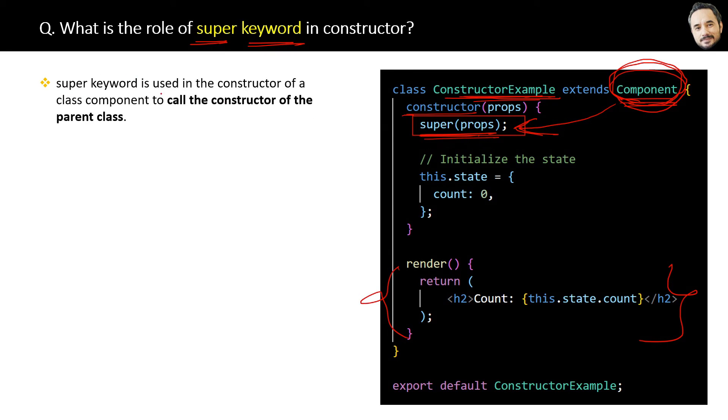First, the super keyword is used in the constructor of a class component to call the constructor of the parent class. Second, this is necessary to ensure that the initialization logic of the parent class is executed. Remember, that's it.